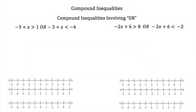Now the next type of compound inequalities we're going to talk about are compound inequalities involving the word OR. Our first example here is negative 3 plus x must be greater than 1, or negative 3 plus x must be less than negative 4. Just like before, we'll solve these two statements individually. For the first one, negative 3 plus x must be greater than 1.